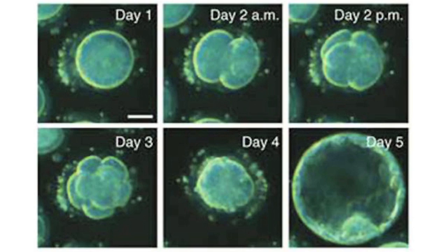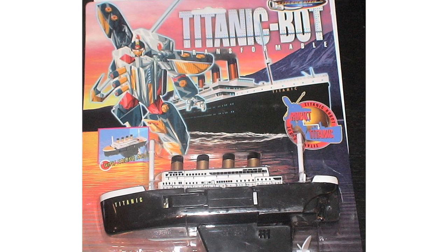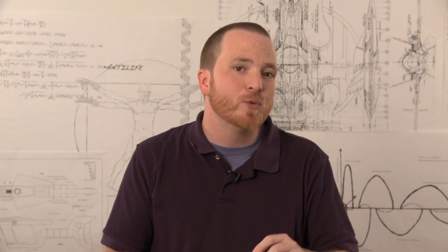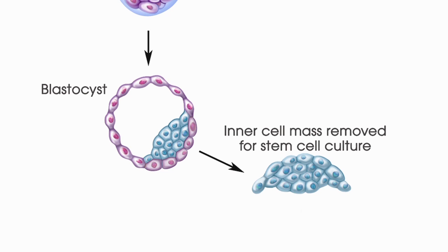Then the scientists give the eggs a jump start. They shock the egg to trigger cell division and growth, which eventually leads to an early stage embryo called a blastocyst, which kind of sounds like the name of a Decepticon that didn't quite make the cut. Now is the time to decide if you want to do therapeutic cloning or reproductive cloning. In therapeutic cloning, cells from the inner cell mass of the blastocyst are isolated and used to make stem cell lines.